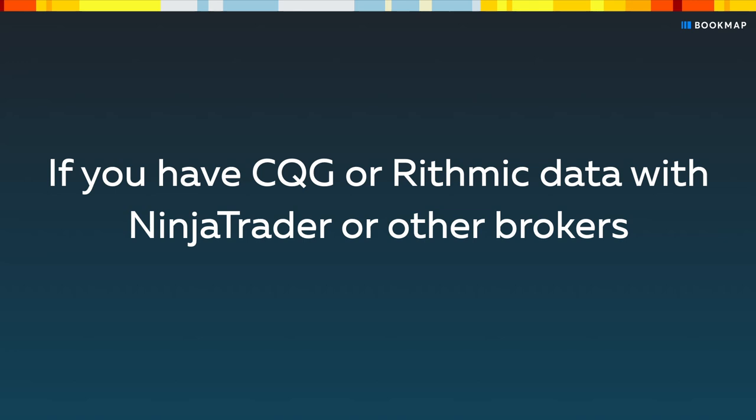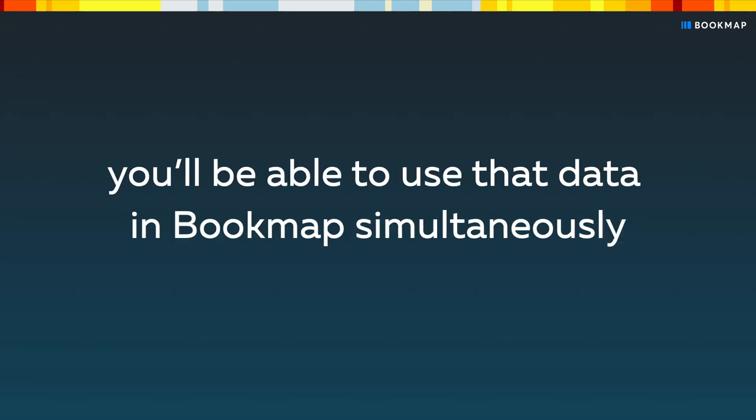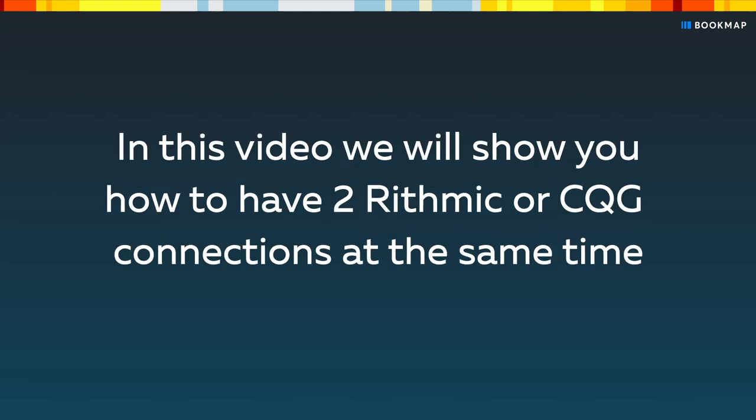If you have CQG or Rhythmic data in NinjaTrader or other brokers, you'll be able to use that data in Bookmap simultaneously. In this video, we'll show you how to have two Rhythmic or CQG connections at the same time — one for Bookmap and the other for NinjaTrader. We'll start with Rhythmic.